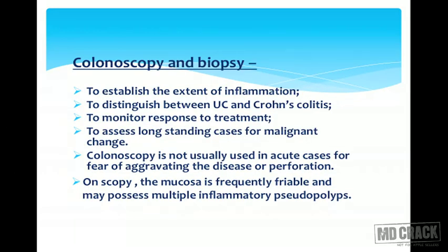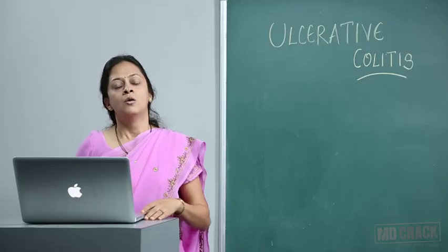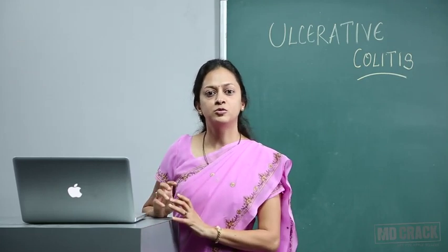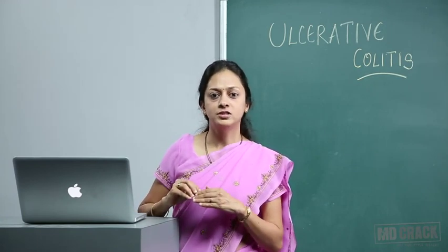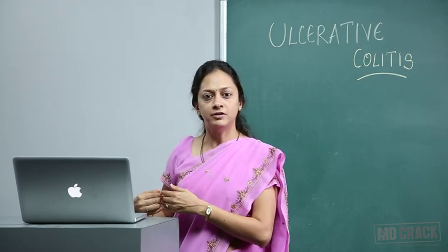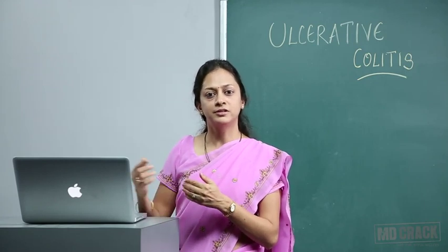Colonoscopy and biopsy are performed to establish the extent of inflammation, to distinguish between ulcerative colitis and Crohn's disease, to monitor response to treatment, and to assess long-standing cases for malignant change. Colonoscopy is not usually used in acute cases because it can aggravate the disease or lead to perforation. On scopy, the mucosa is frequently friable and may show multiple inflammatory pseudopolyps. Bloody diarrhea with lead pipe appearance and pseudopolyps on barium enema is diagnostic of ulcerative colitis.